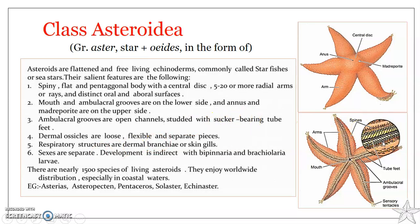In the case of asteroids, the ambulacral grooves are not covered by ossicles or any other dermal tissue, and hence they are of the open type. Similarly, in crinoids, the ambulacral grooves are open, while all other groups have closed-type ambulacral grooves. So ambulacral grooves in asteroids are open channels studded with sucker-bearing tube feet, and dermal ossicles are loose, flexible, and separate pieces that cover the body.